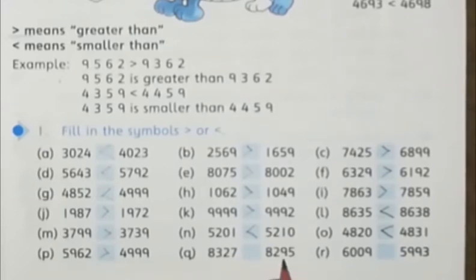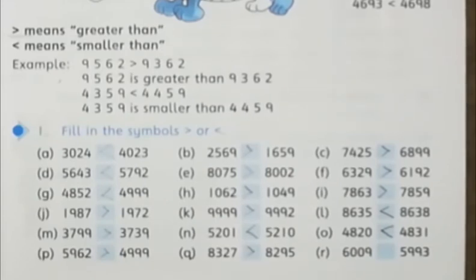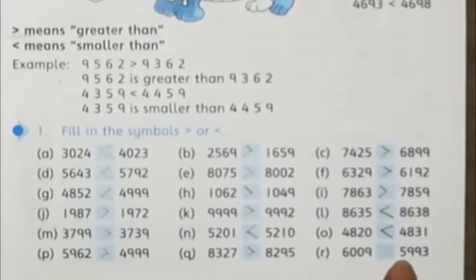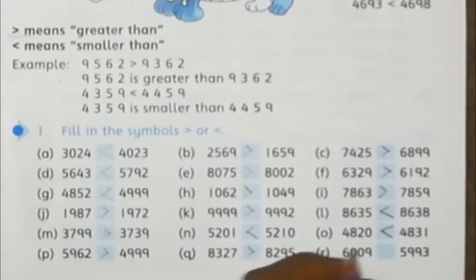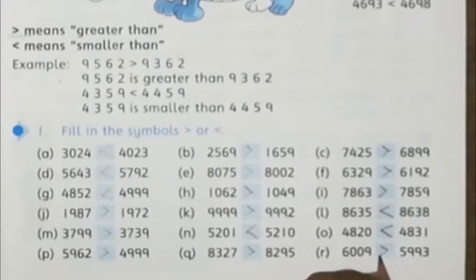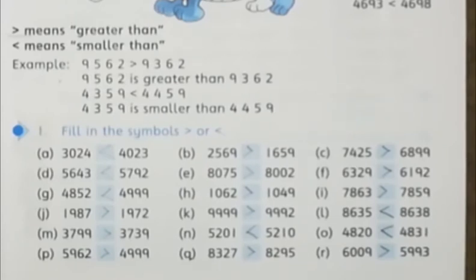8327 and 8295 — so 8327 is greater. Next, 6009 and 5999 — which one is greater? Obviously 6009 is greater. So basically it is the basic concept that we learned in our junior classes in grade 1 and grade 2.